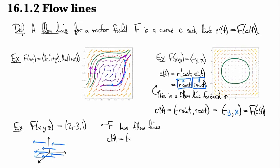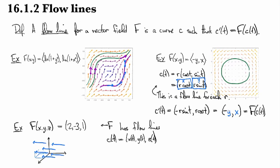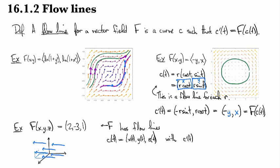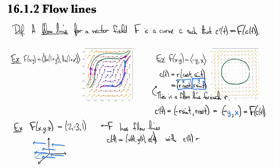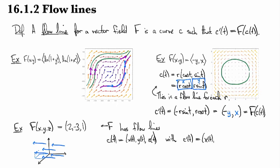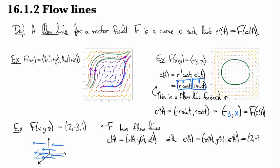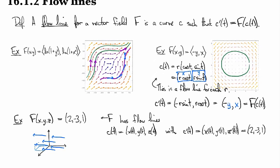This guy is going to have flow lines that look like x of t, y of t, z of t. If it's a flow line then the defining property says that c prime of t has to be equal to this two, minus three, one that we found at every single point. The derivative just by differentiating coordinate by coordinate is x prime, y prime, z prime, and so that's going to be two, minus three, one. So that tells us that x prime is two, y prime is minus three, and z is equal to one.